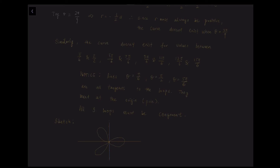Then we add details to the graph — for example, the 3 tangent lines to the curve, which are theta equals π over 2, theta equals π over 6, and theta equals 5π over 6. And that's all.